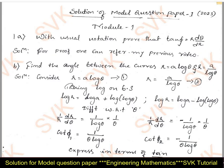Consider these two curves, then take log on both sides. We are going to get log r equal to, on the right-hand side, applying laws of logarithm: log a plus log(log θ). Similarly, for the second equation, applying laws of logarithm: log a minus log(log θ).